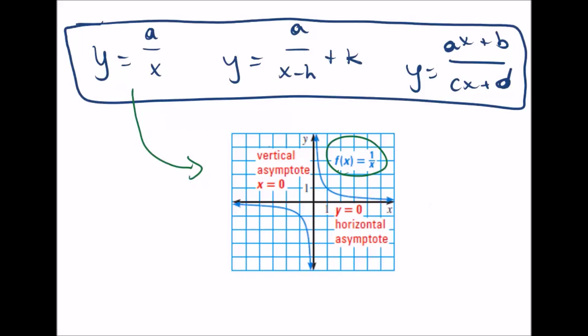There's a vertical asymptote at x equals zero. So at this line, x equals zero, there is an asymptote that separates them.